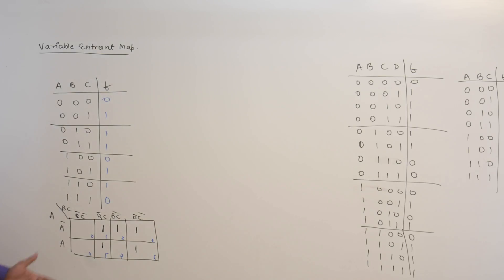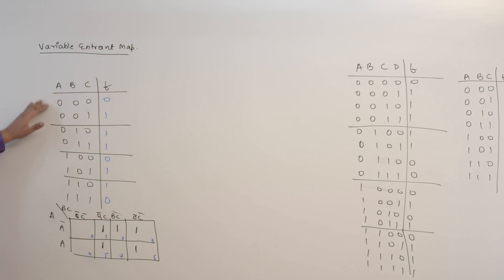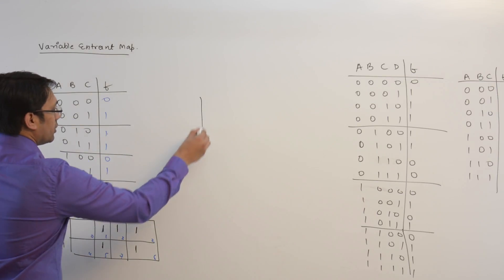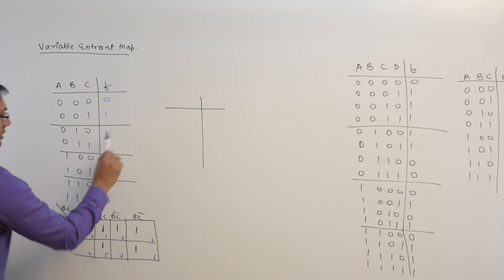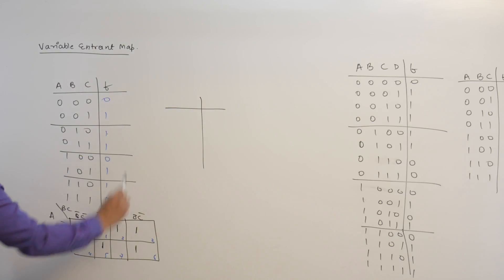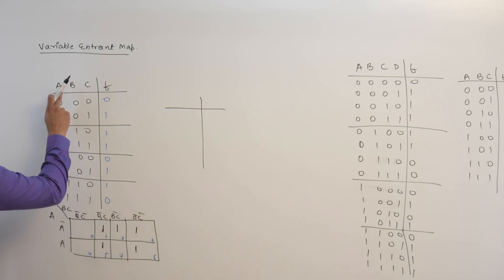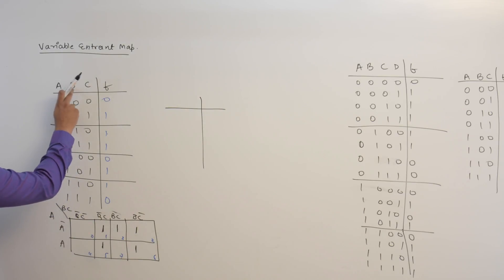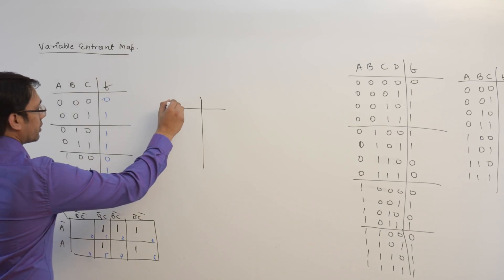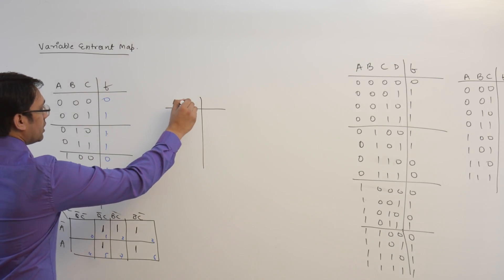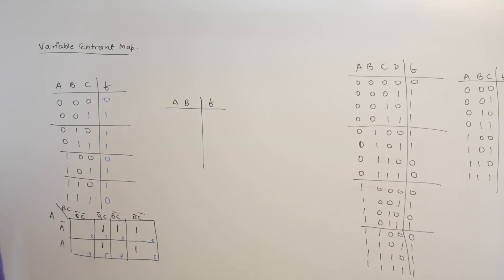We are representing the above function with a three-variable K-map which has eight cells, but you can also represent the same function with a two-variable K-map using the Variable Entrant Map. To do this, let us draw the variable entrant table. We have three variables A, B, and C, so we will write A, B, and the function F.